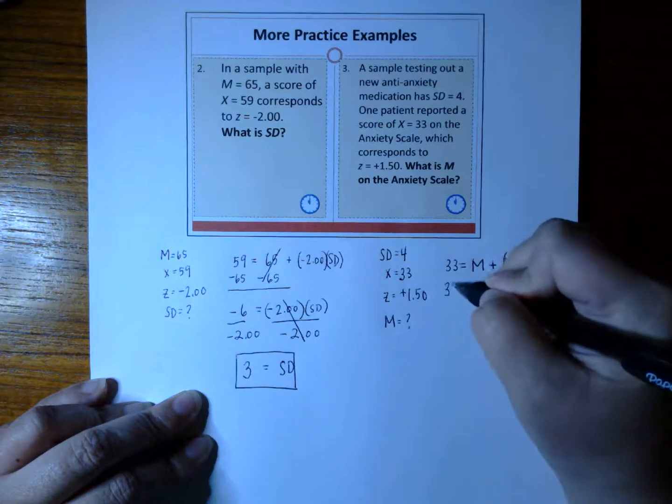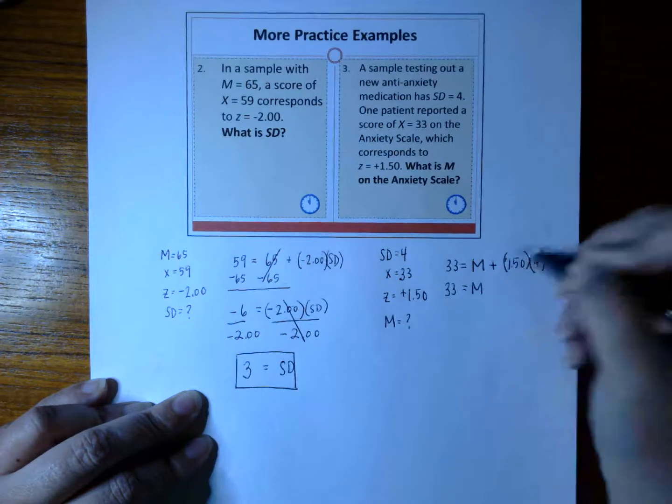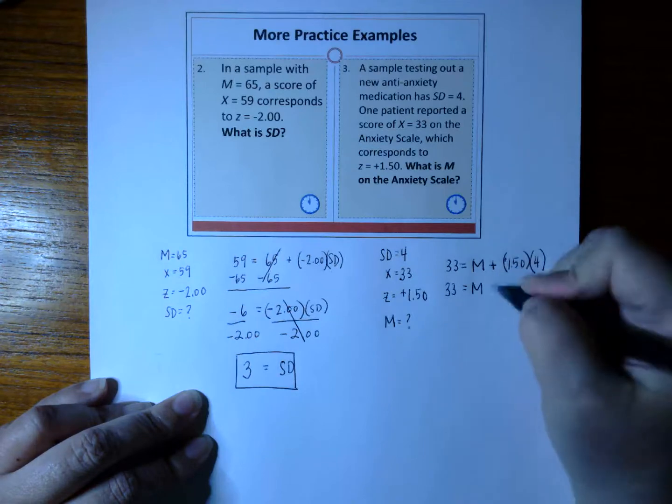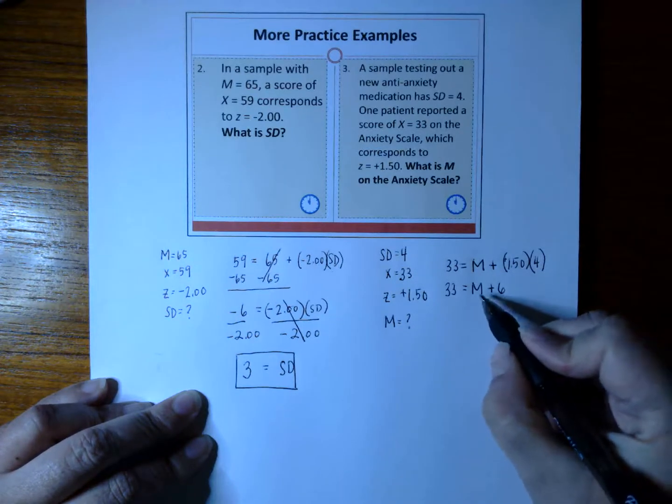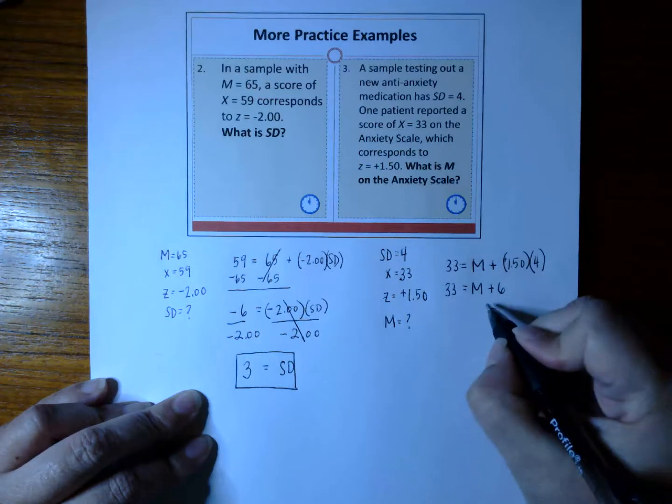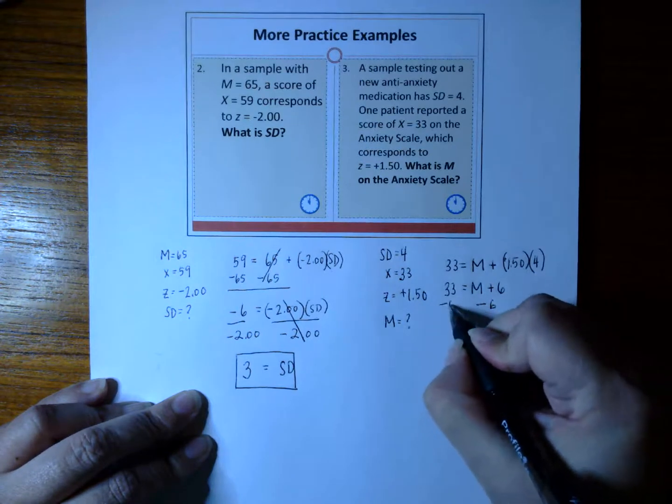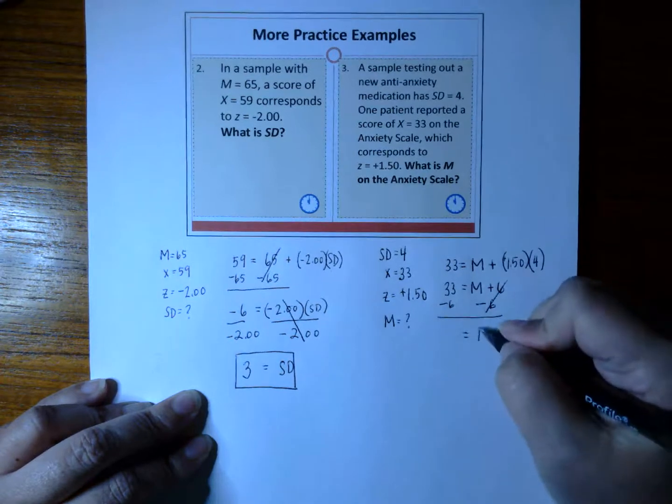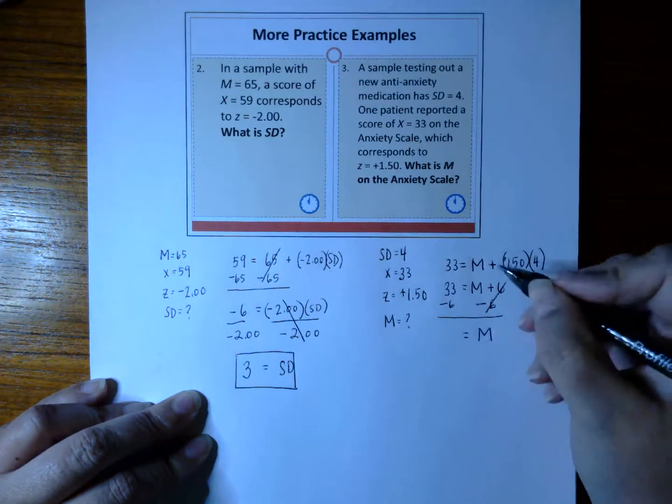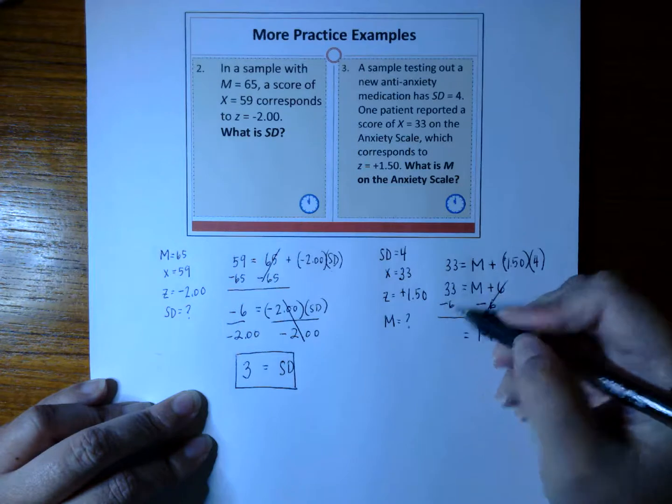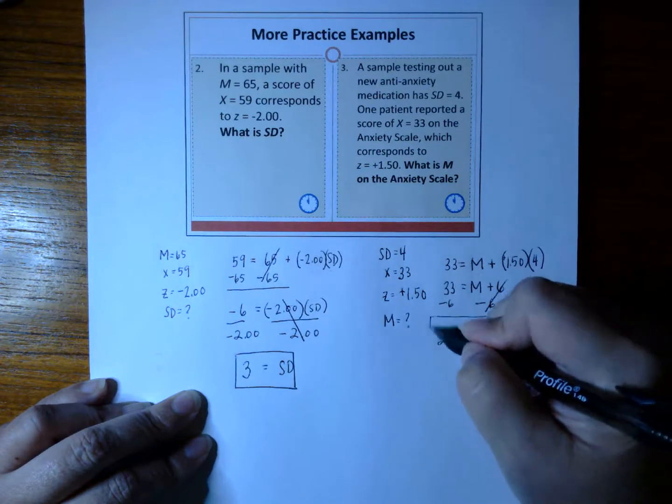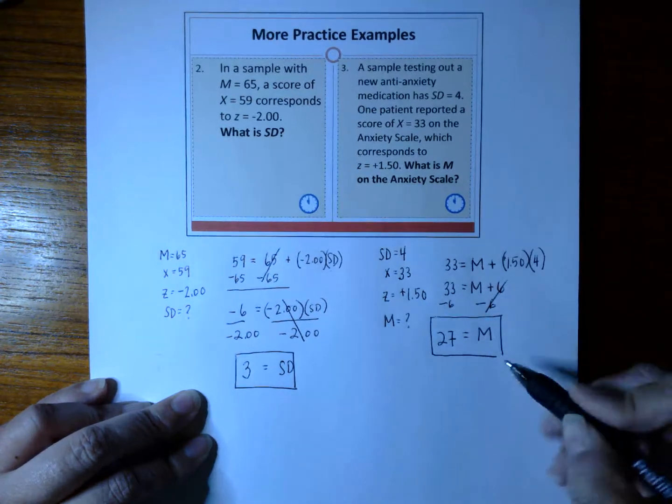We have a 33 over here. What is a 1.50 times 4? That gives us a plus 6. What do we need to do to get the mean all by itself? Subtract 6 from both sides. Then all we have left over here is a mean. And 33 minus 6 is 27. Our final answer is 27.